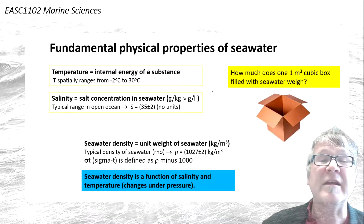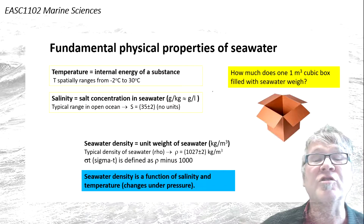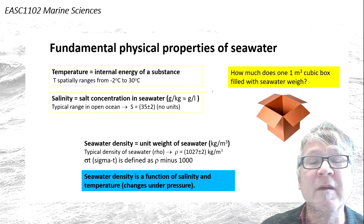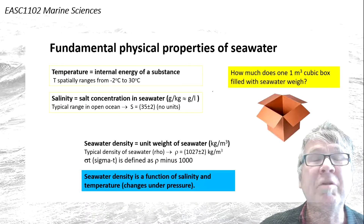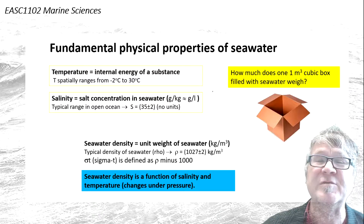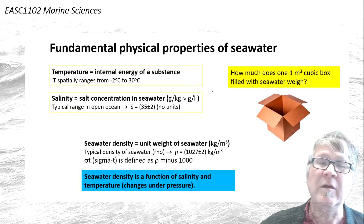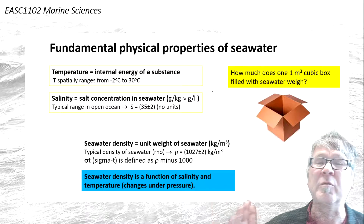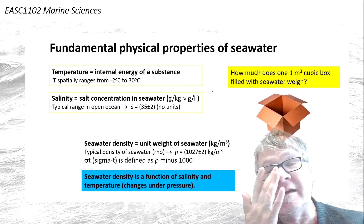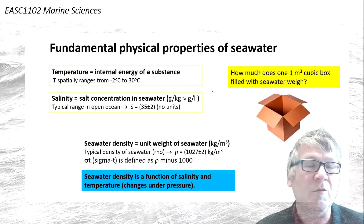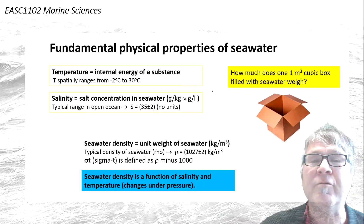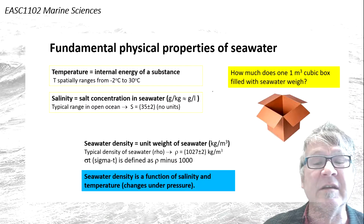The typical range in the open ocean is salinity around 35 plus or minus 2. That's a very small range — you wouldn't taste the difference, it's all salty. The differences are so small you need very accurate instruments to measure salinity.